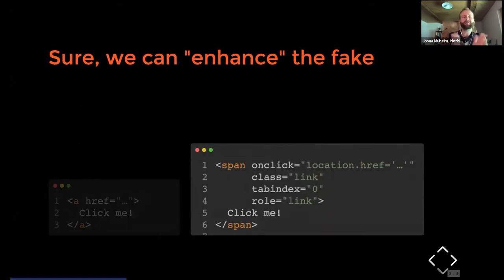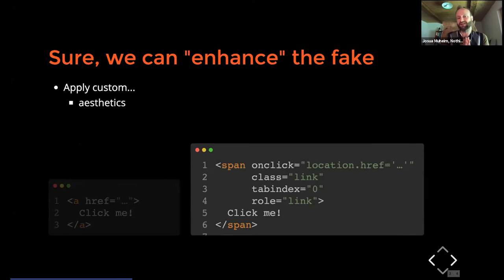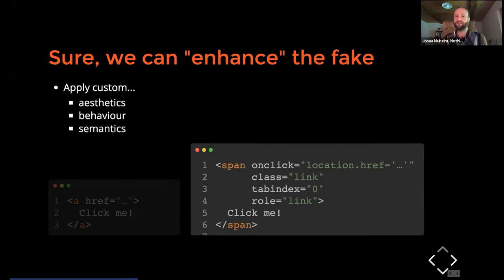You might say: we can enhance a span to look, feel, and act like a real link. We can apply custom aesthetics using CSS, add custom behavior using JavaScript, and even make it focusable with the keyboard using the tabindex attribute. What few people probably know is that we can even change semantics using the role attribute, which will cause a screen reader to announce the span as a link indeed.